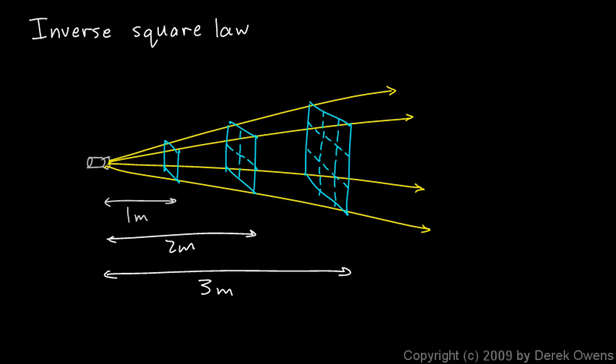This inverse square relationship basically arises as a property of three-dimensional space in which we live. And Newton understood this, and he figured that gravity would be stronger at closer distances and would weaken according to an inverse square law in much the same way that illumination did.